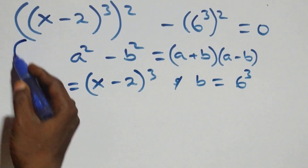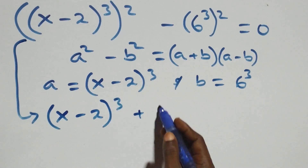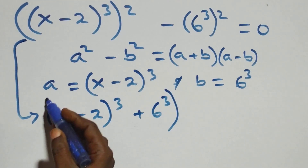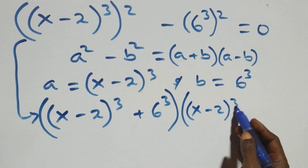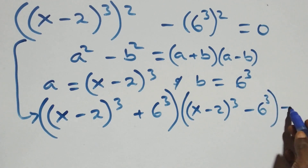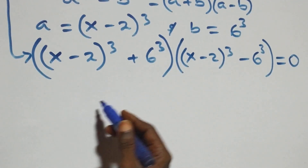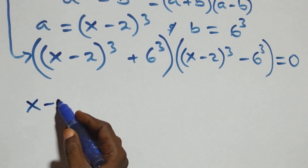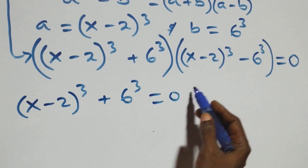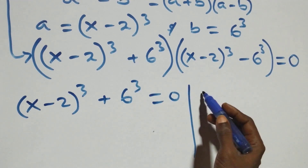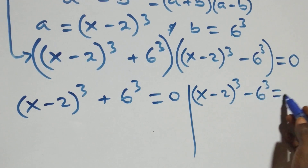Then what we have here follows as: x minus 2 raised to power 3 plus 6 raised to power 3, in brackets, times x minus 2 raised to power 3 minus 6 raised to power 3, in brackets, equals to 0. So we have 2 possible cases: the first one, x minus 2 raised to power 3 plus 6 raised to power 3 equals to 0, or x minus 2 raised to power 3 minus 6 raised to power 3 equals to 0.